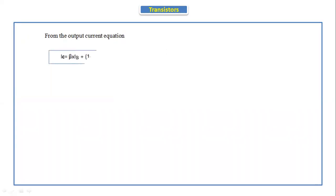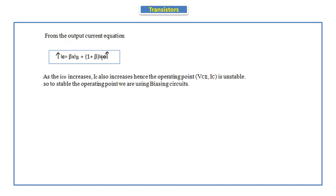To see how increasing reverse saturation current affects the transistor, we use the output current equation. In common emitter configuration: IC = β × IB + (1 + β) × IC0, where IC is the output current, β is the gain, IB is the input current, and IC0 is the reverse saturation current. If the temperature increases, reverse saturation current increases, and as reverse saturation current increases, IC also increases. Hence the operating point (VCE, IC) becomes unstable.